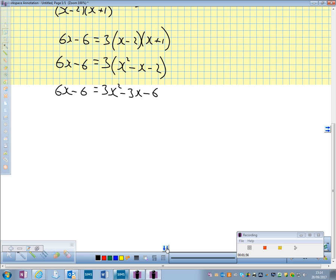Hopefully people can spot that this is now a quadratic equation. So we need to take everything over to one side. I'm going to take away 6x from both sides. So that's going to give me 3x squared minus 9x, and then minus 6 and minus 6 just cancel each other out.